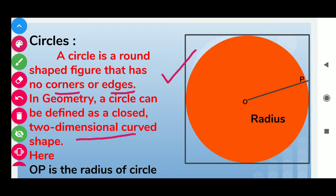Here O is the center of the circle and point P lies on the boundary of the circle. If we join these two points, then this line is called the radius. In this way, OP is the radius of the circle.